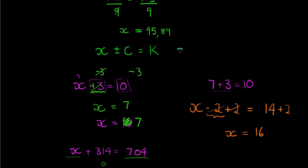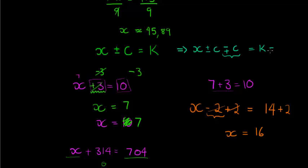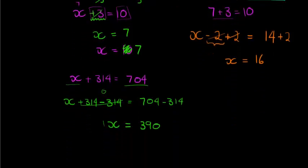The conclusion: if a constant is being added to x, subtract it from both sides; if it's being subtracted, add it to both sides. You do the exact same operation on both sides so that the constant cancels on the x side. Don't memorize the formula — remember the principle, which I'll summarize shortly.